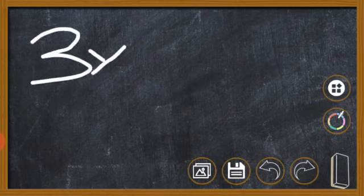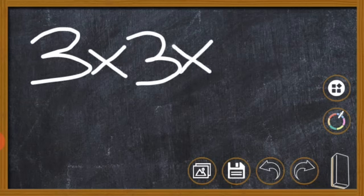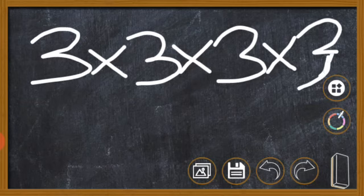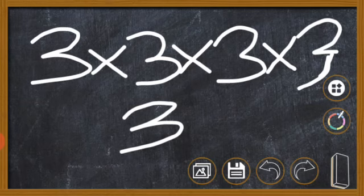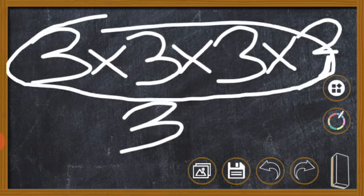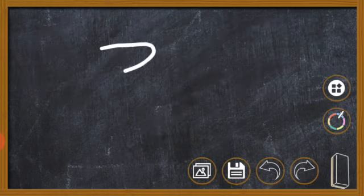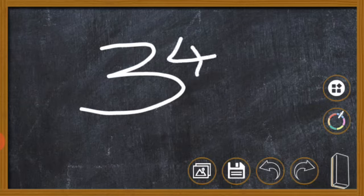Another example is, you might be given a question and you'll be asked to express it in index form. For instance, three times three times three times three. What do you do in this case? Simple. Pick a number to represent the others. Pick a base number to represent the others, which is three, because all the numbers are three. But how many times is three appearing? Four times. So, our answer is three to the power of four.